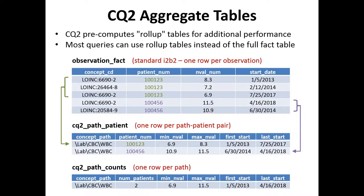We then took that faster idea and expanded it in multiple different ways. The first thing we do in Clinical Query 2 is generate aggregate tables — these are roll-ups from the fact table. For example, for white blood cell counts: there are a couple of different LOINC codes, each patient has multiple white cell counts during their history. We create a table called the path patient table, so each line represents a patient and a path in the ontology. Instead of multiple LOINC codes there's a single path to white blood cell count, and each patient has one line representing the lowest, highest, earliest, and latest white blood cell count.